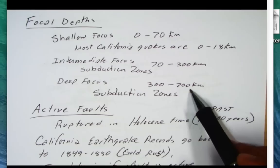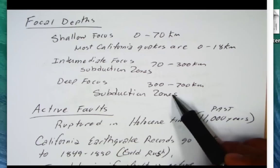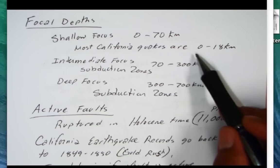Once you get below 700 kilometers, the rock being subducted deep in the mantle is now behaving in a ductile fashion. It's plastic because of the heat. Obviously, these two, intermediate and deep focus, they're going to be related to convergent margins, subduction zones.